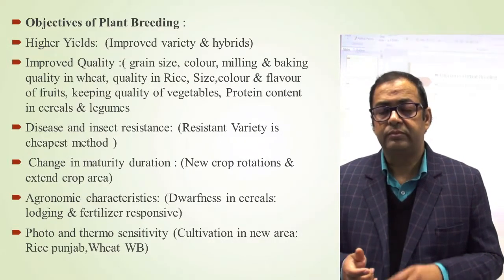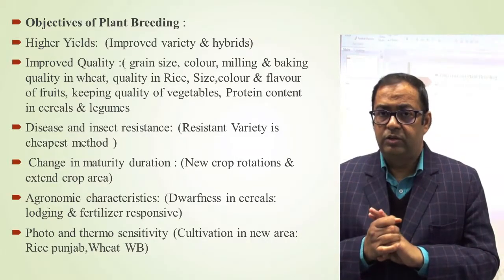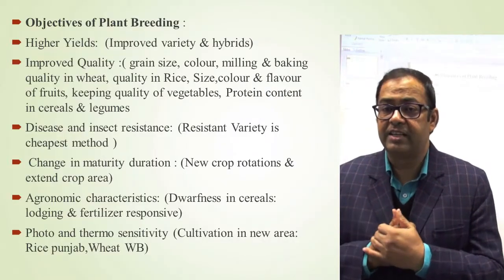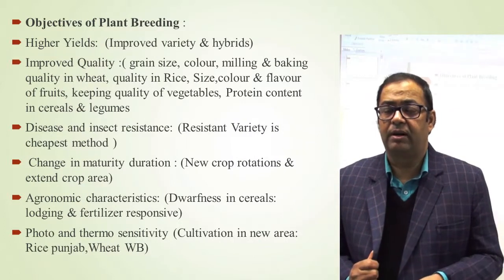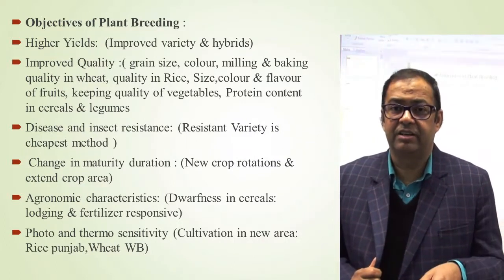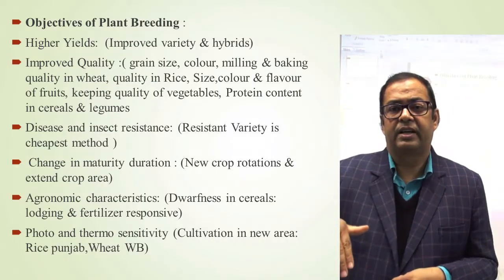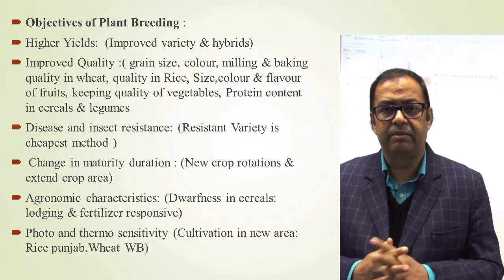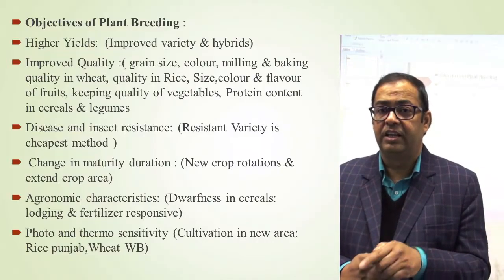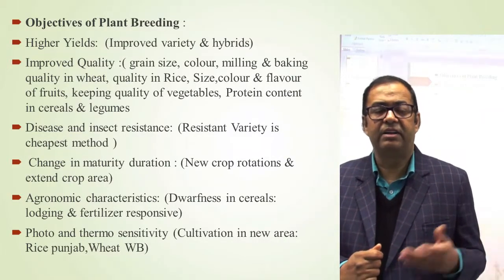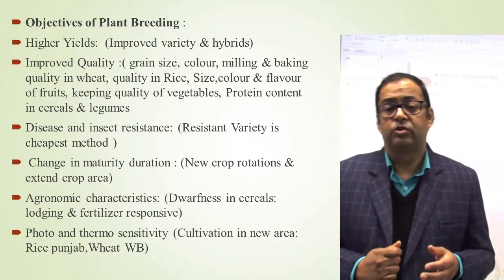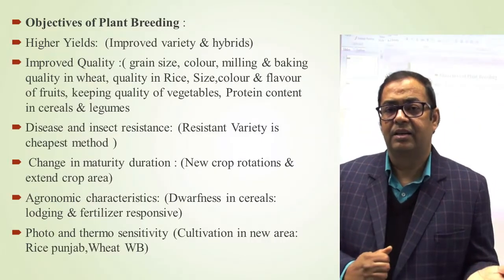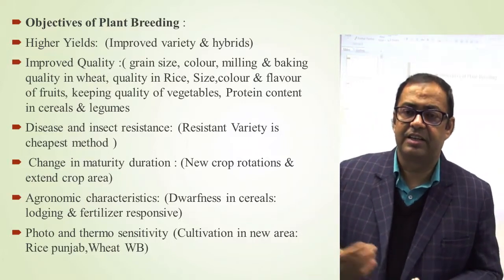In the Green Revolution, in wheat and rice, two genes were responsible. The Norin 10 dwarfing gene in wheat and the dwarfing gene in rice helped develop so many varieties. In rice, it started with the IRRI Philippines IR series developed using that dwarf gene. In India, Ratna and other rice varieties were developed, and in wheat, Sonara varieties were developed using the Norin 10 dwarfing gene.